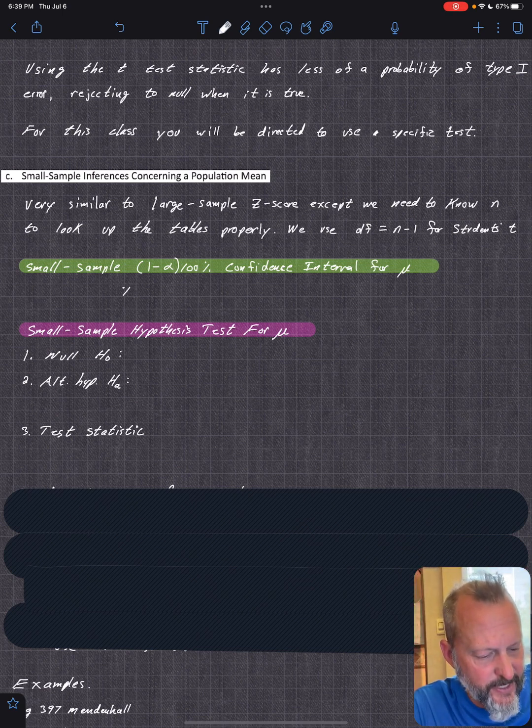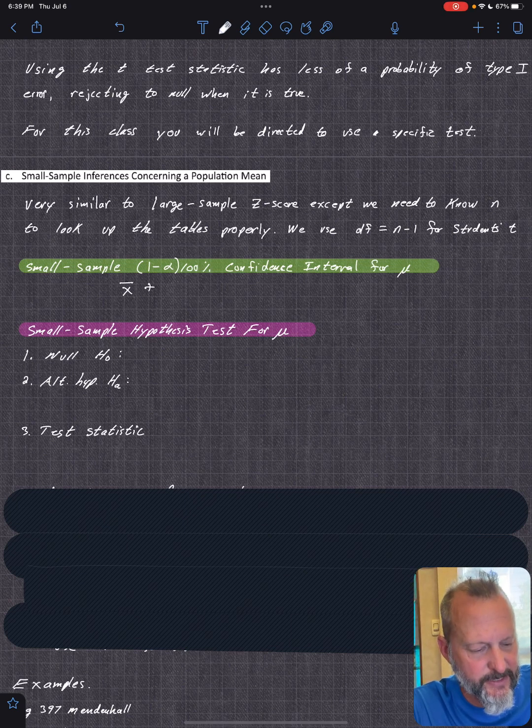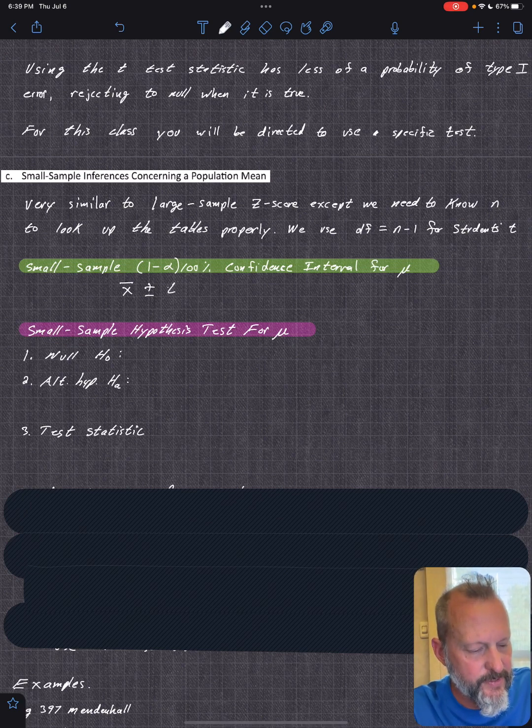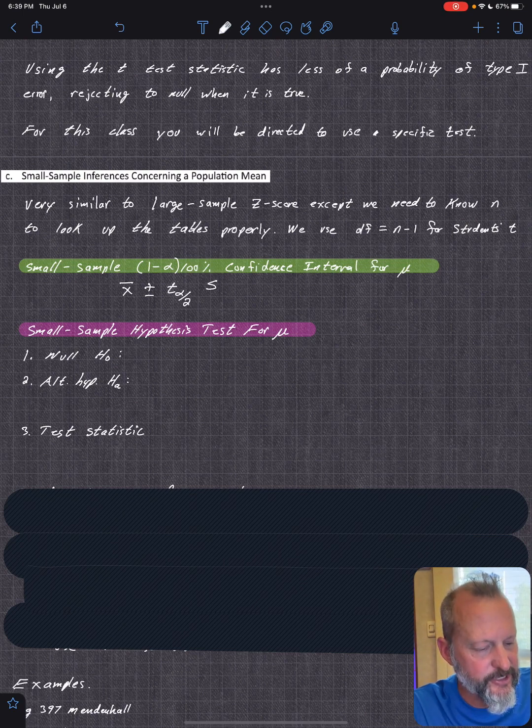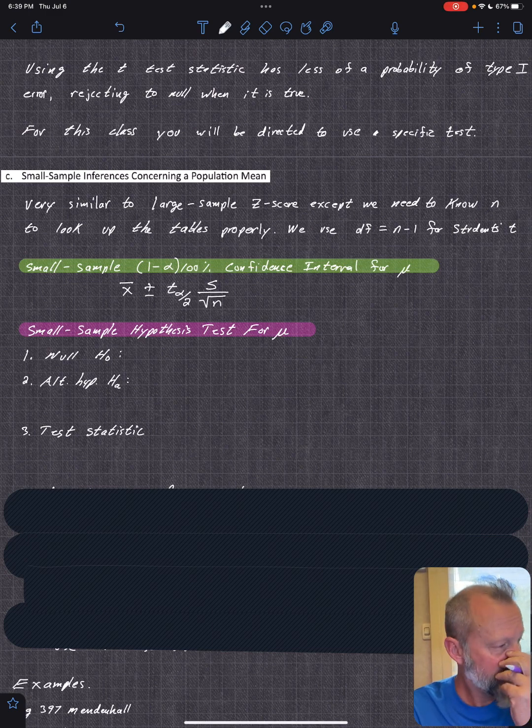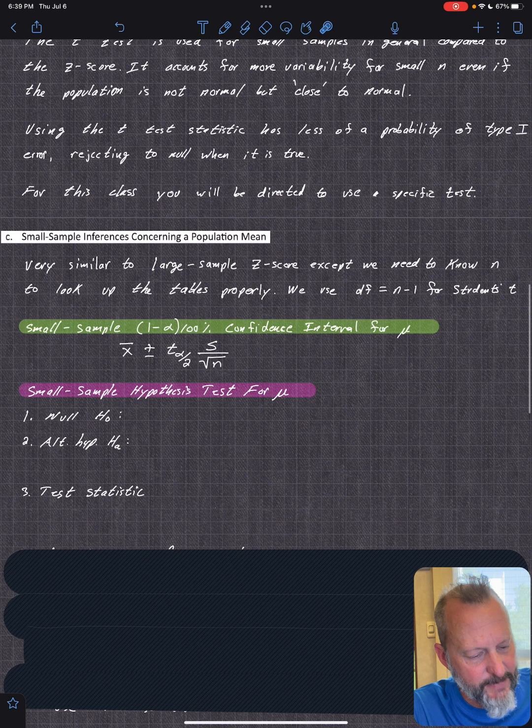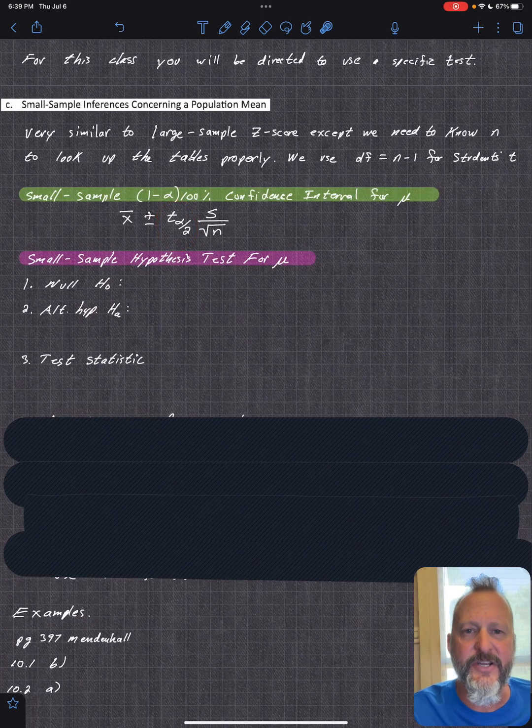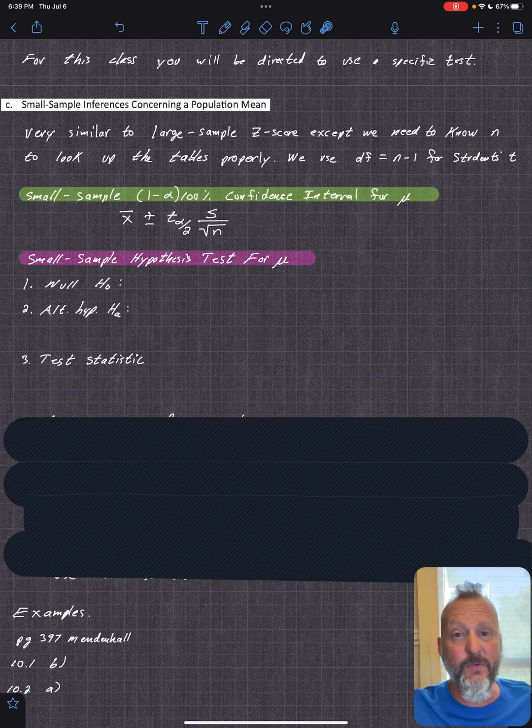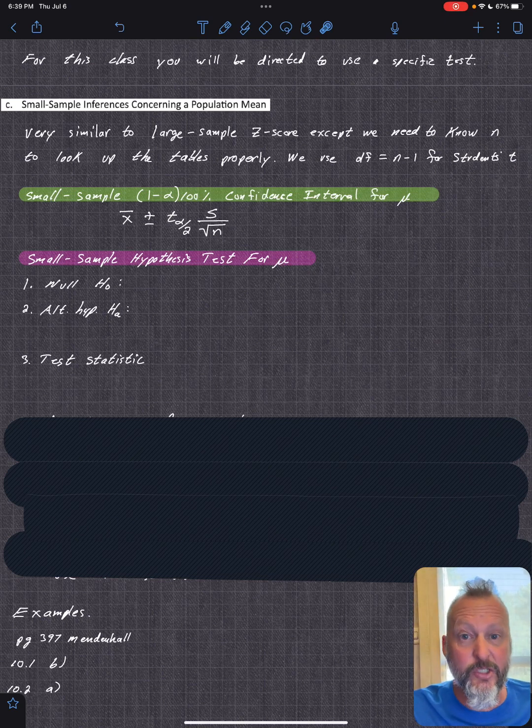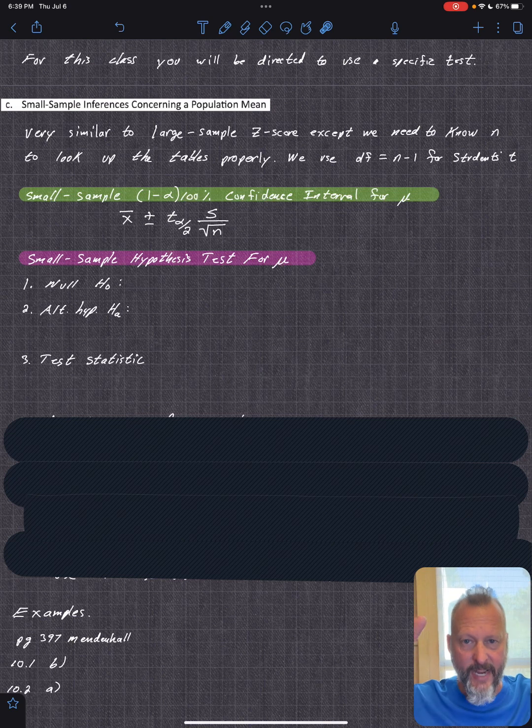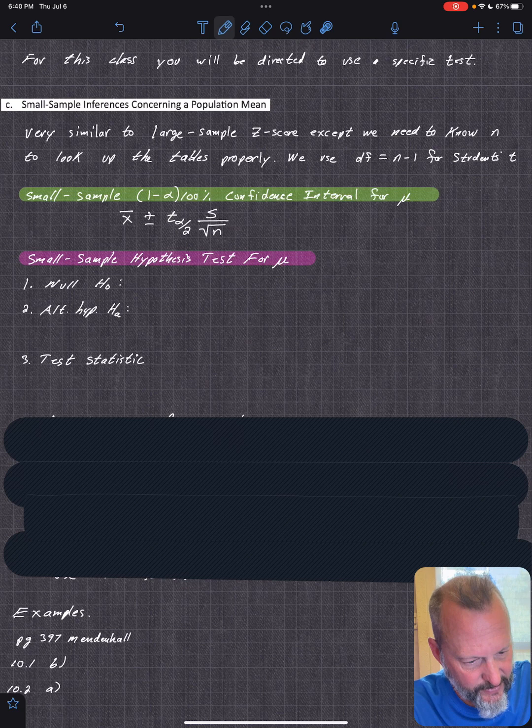So confidence interval, you'll find x bar and it's plus or minus just like before. And then now you would have put the z score. Well, now you do t sub alpha over two, whatever you calculate. And then you calculate the standard deviation S divided by the square root of N. Everything is the same except for that number.